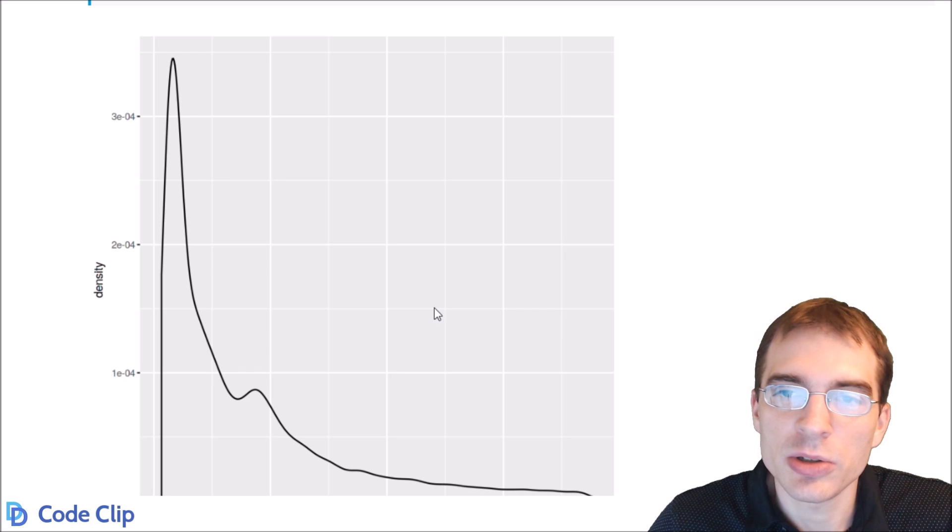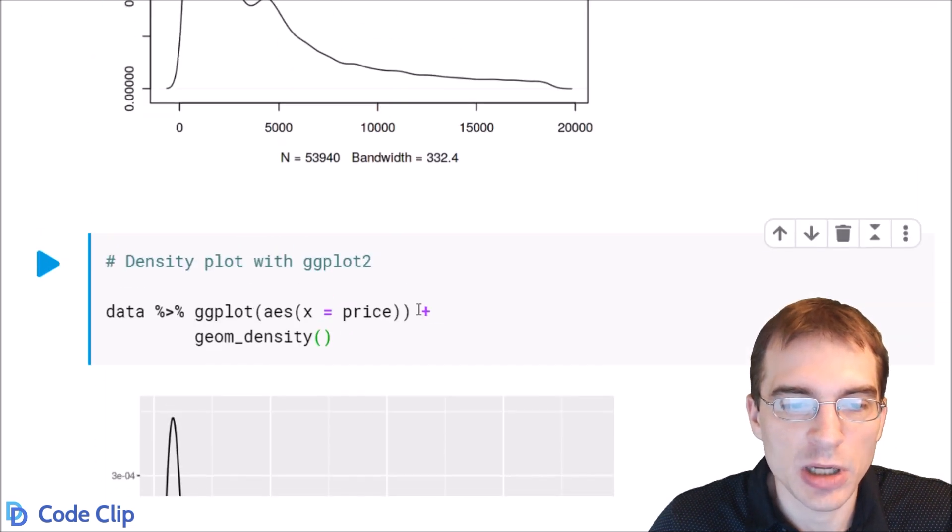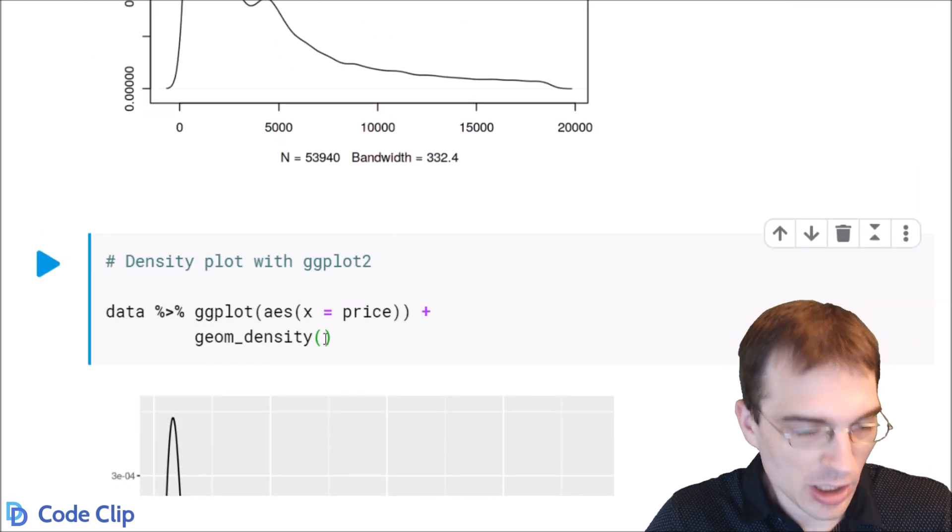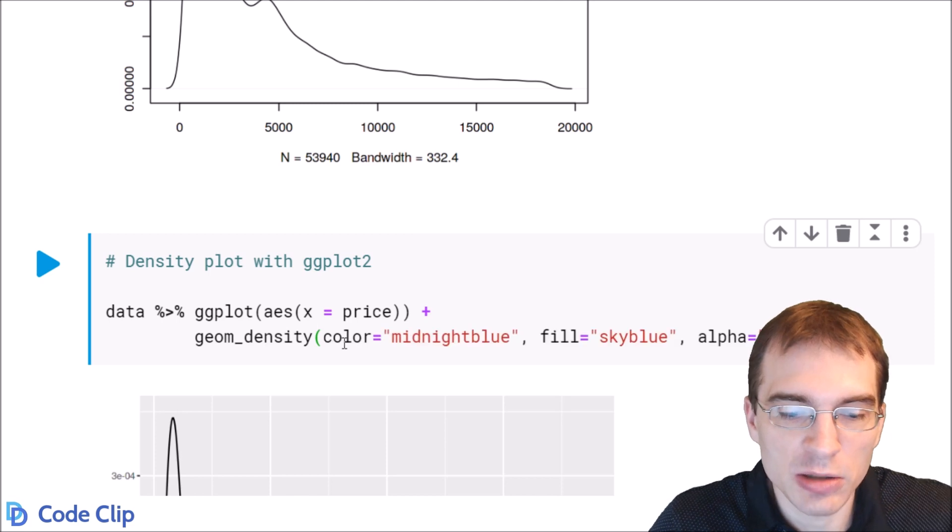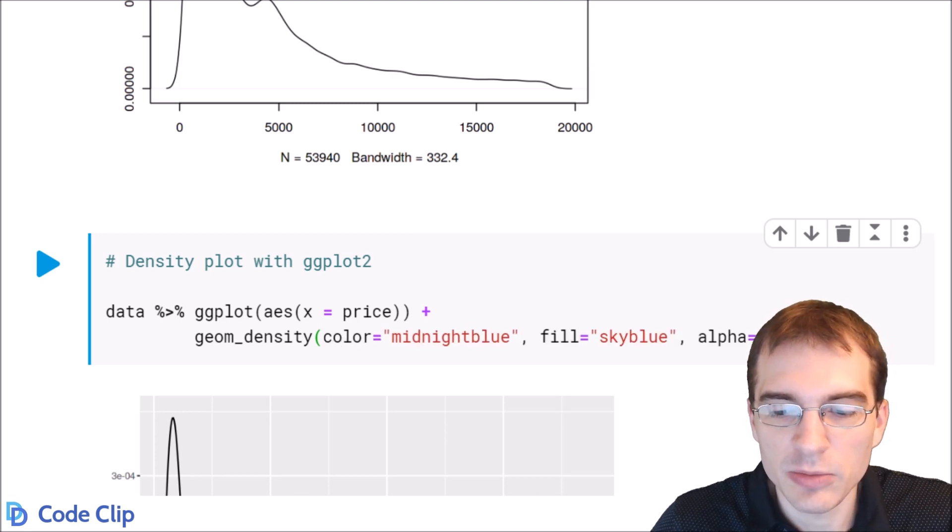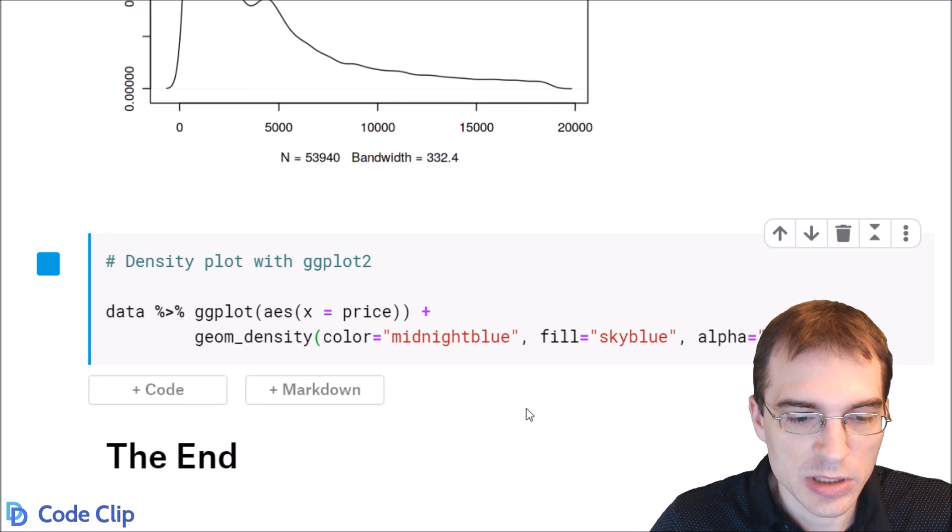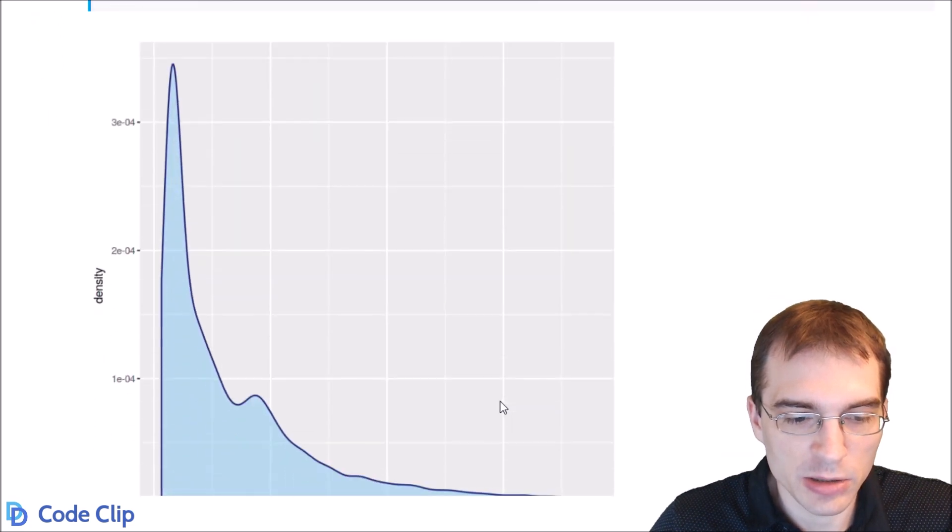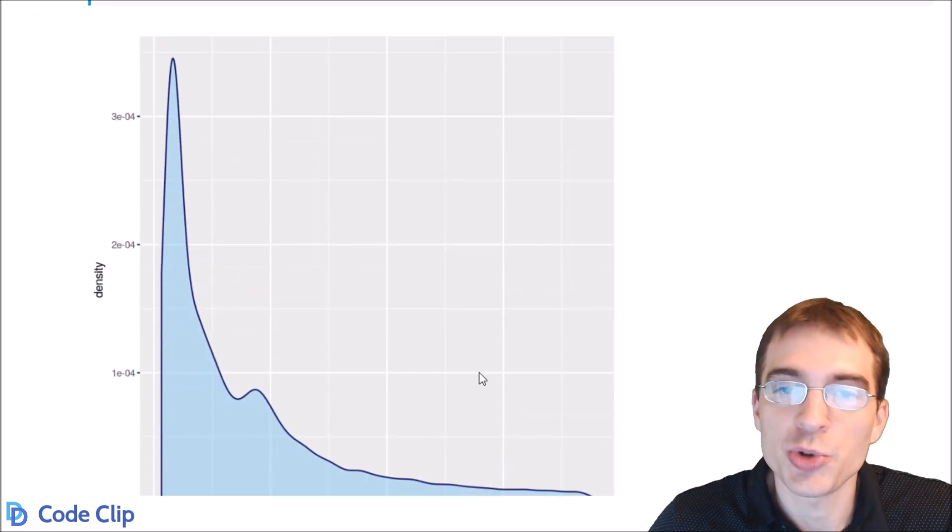Of course, with ggplot2 you can do a lot of extra things to spice it up. We could add some arguments into the density function here, like coloring, filling, set an alpha, and we'll just run this and see what it looks like to add some color and a little bit of extra sprucing up to the plot.